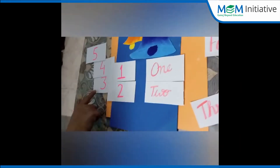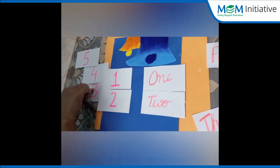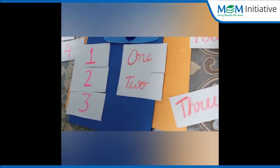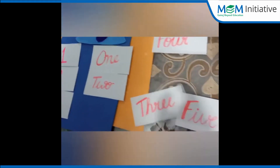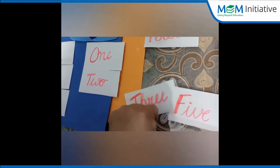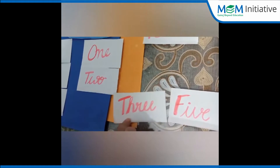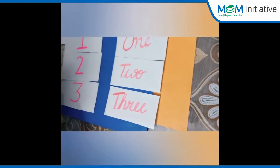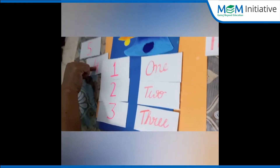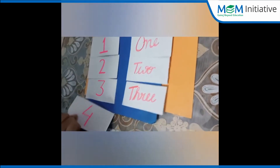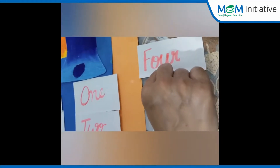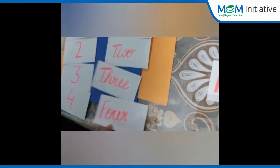Let's see where is number 3. Here it is, number 3. Now let's find out where is number name 3. Yes, here it is, number name 3. T-H-R-E-E, 3. Now let's find out where is number 4. Here it is, number 4. Where is number name 4? Here it is. F-O-U-R, 4.